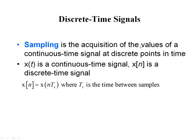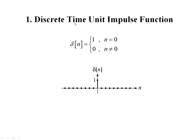Next is a discrete signal. How do you convert a continuous signal to a discrete one? By a process called sampling. Sampling is nothing but the acquisition of the values of a continuous-time signal at discrete instants of time. Continuous signals are represented by x(t) and discrete signals by x(n). Now coming to the discrete time unit impulse function: previously represented as δ(t), now since it is discrete it is δ(n). δ(n) takes the value 1 at n = 0 and 0 for all other values of n.